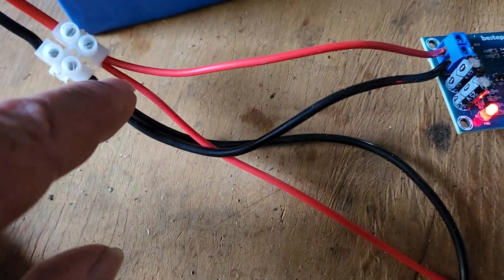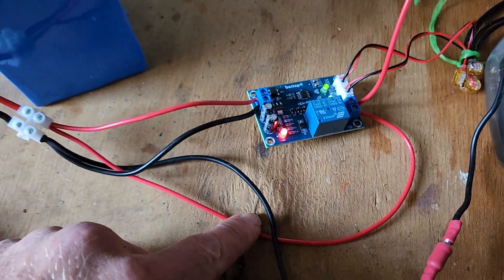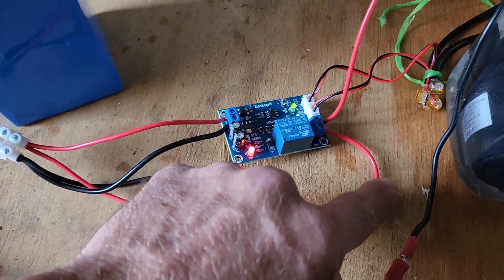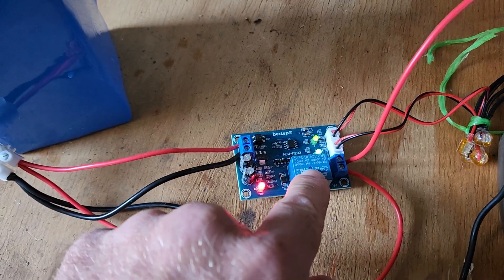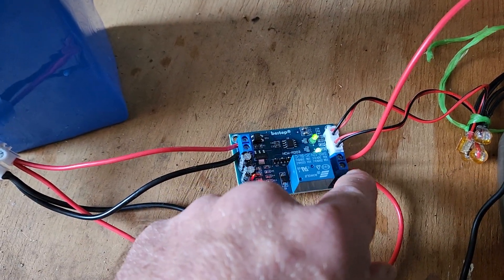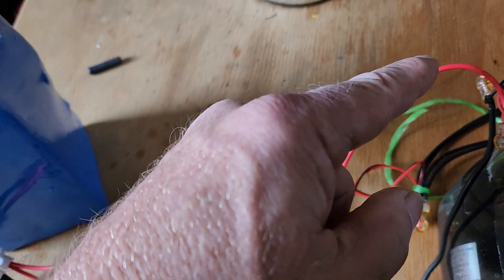The positive going to the pump is here, so that runs into here where there's the relay switch. It switches this positive on and off, and that goes to the pump. The negative I've got going to the pump as well, all the way to the pump.